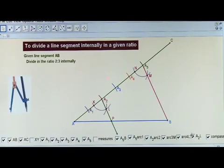Join A2L and produce it to intersect the line segment AB at P. Then the point P is the required point which divides the line segment AB in the ratio 2 is to 3 internally.